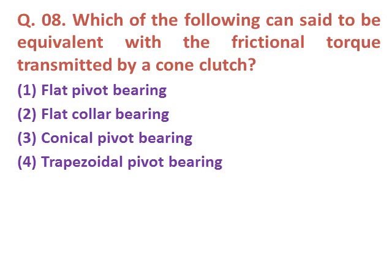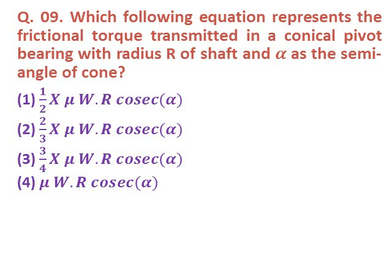Question eight: Which of the following can be said to be equivalent to the frictional torque transmitted by a cone clutch? Option one: flat pure bearing. Option two: flat collar bearing. Option three: conical pivot bearing. Option four: trapezoidal pivot bearing. The correct answer is trapezoidal pivot bearing.